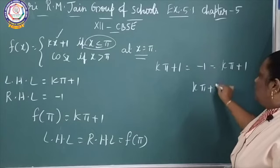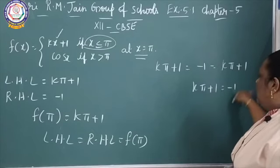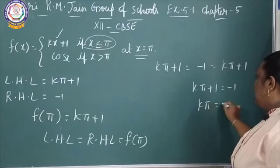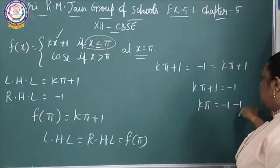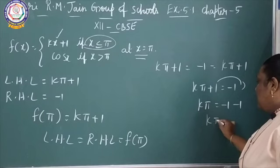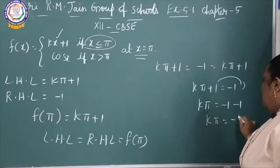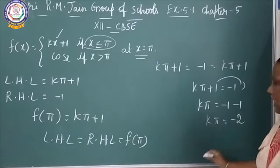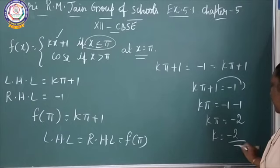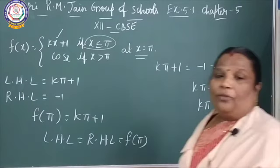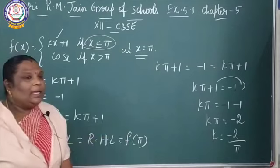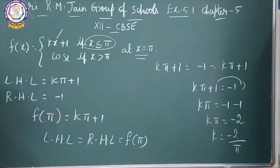We should find out the value of k. From k pi plus 1 equal to minus 1, we get k pi equal to minus 1 minus 1, which gives k pi equal to minus 2. Therefore k equal to minus 2 by pi.